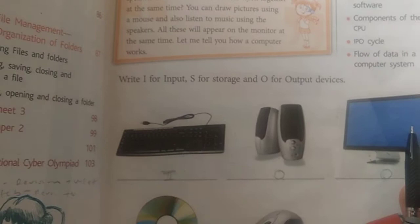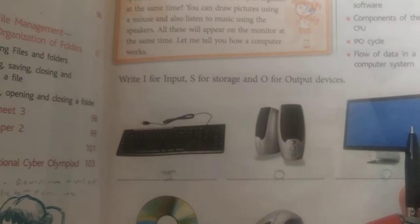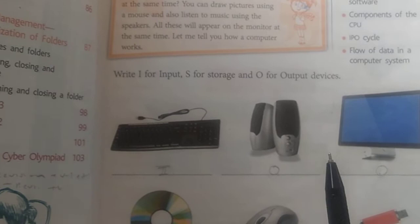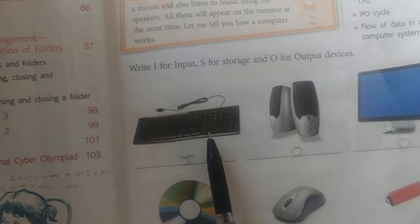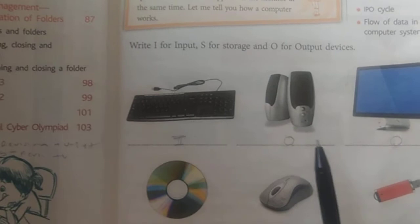In Computer System, first we need to know which device is input, which is output, and which is storage. Keyboard - we enter data from the keyboard, yes. And we can also enter data using the mouse. So mouse and keyboard are input devices.